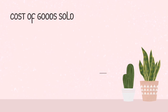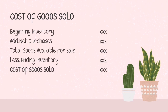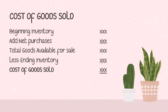Cost of goods sold is the cost of the items that we sell. Here is the computation when using the periodic system: beginning inventory is added to net purchases, which are purchases less purchase returns and allowances, purchase discounts, plus freight in. This gives total goods available for sale. We then deduct ending inventory — the cost of unsold items — to arrive at cost of goods sold for the period.